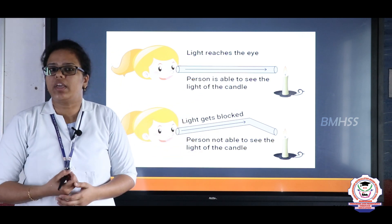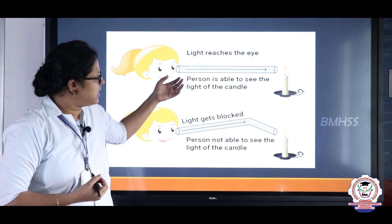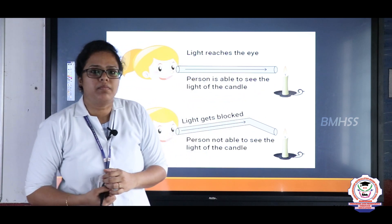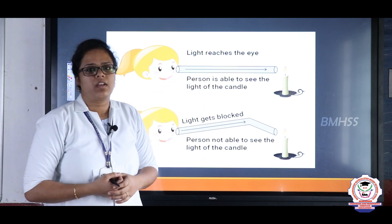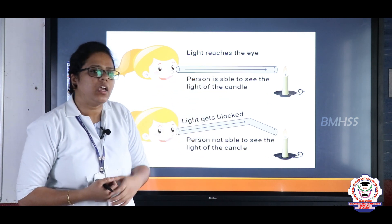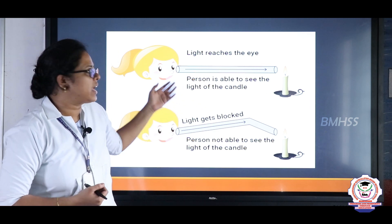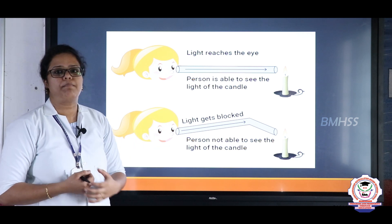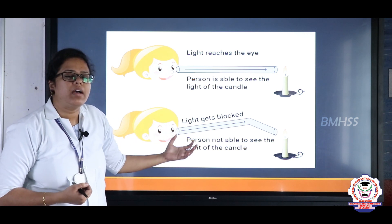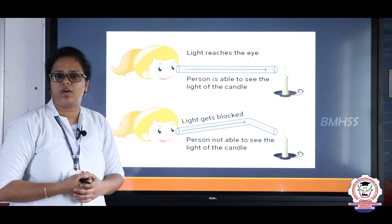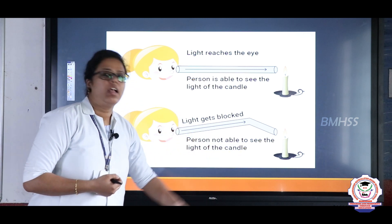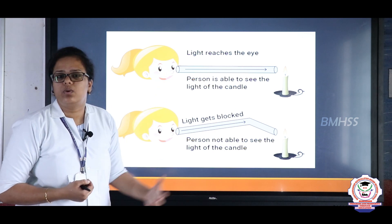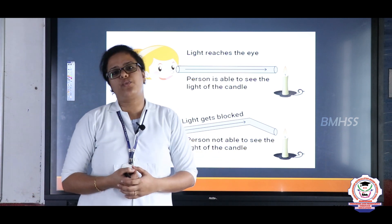This can be proved with the following experiment. Lit a candle and place it on a table. Take a long pipe and look at the candle — you can see the candle. Now just bend the pipe and look at the same candle — you cannot see the candle anymore. This experiment concludes that light always travels in a straight line.